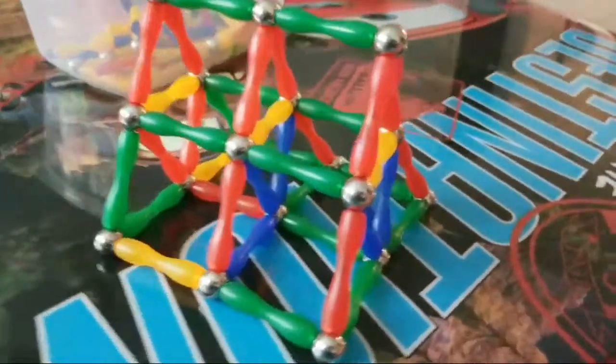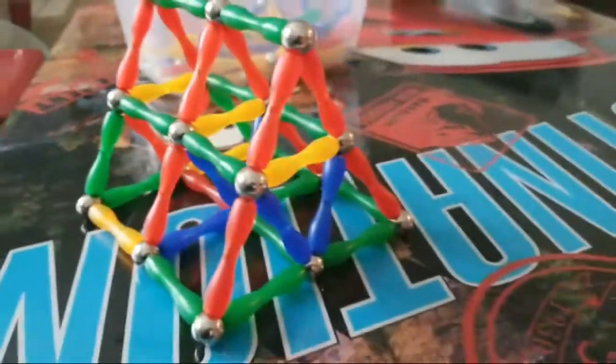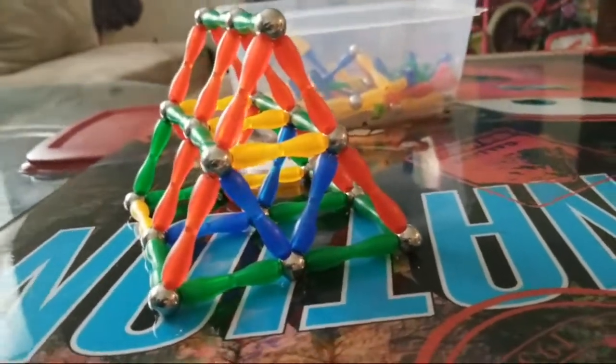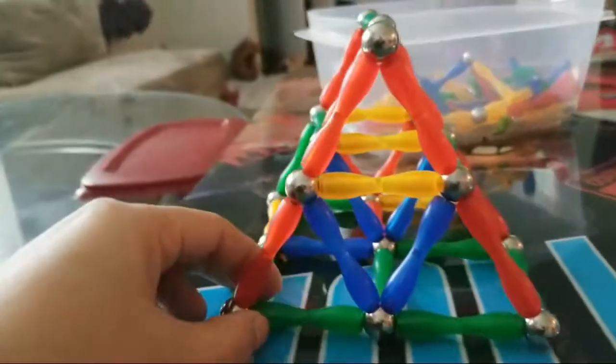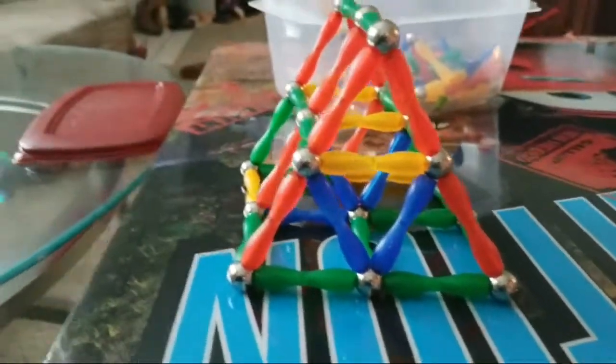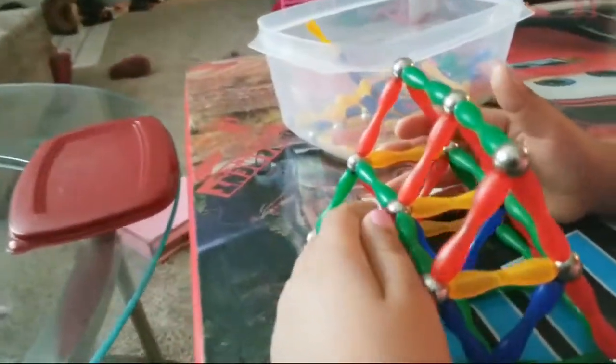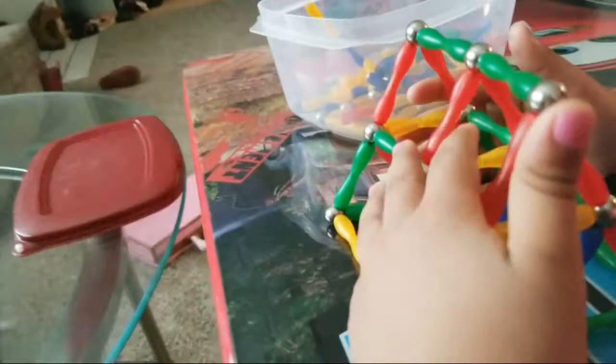Very nice. Let's take a look at your pyramid. Oh, I love it. Can you make another one? Can you make a square one? Yeah, this is a square one, see? No, this is a triangle. See, it has one, two, three sides.